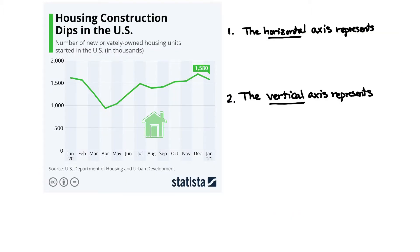The following line graph, taken from Statista, represents housing construction dips in the U.S. The line actually tells the story. We are given that the number of new privately owned housing units started in the U.S. in thousands is represented by this line graph.